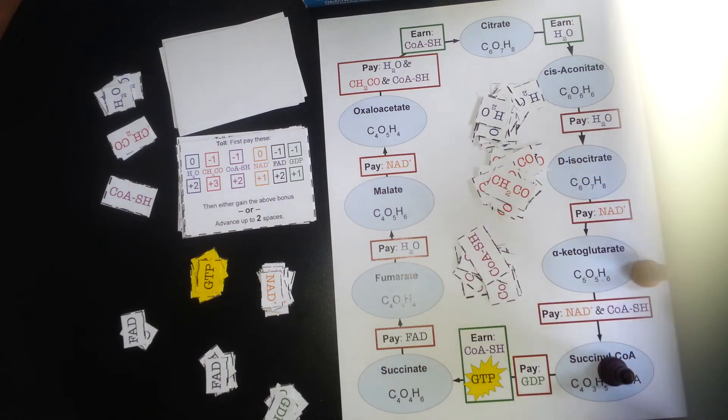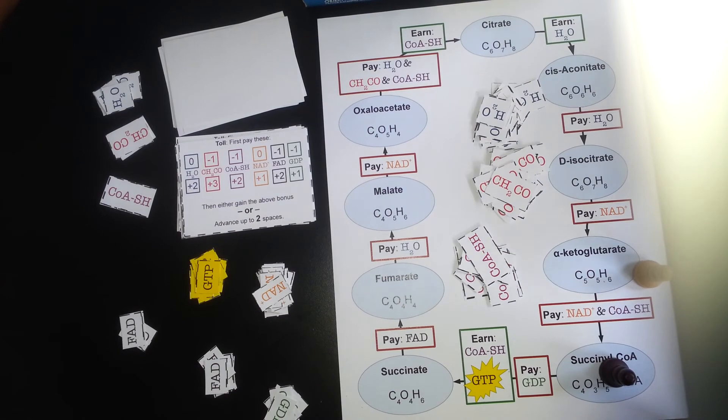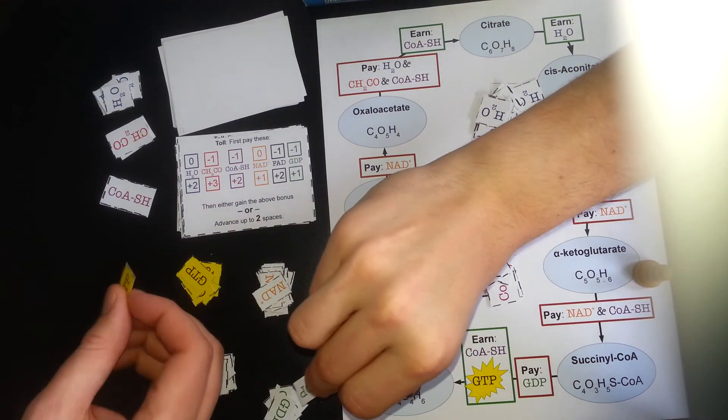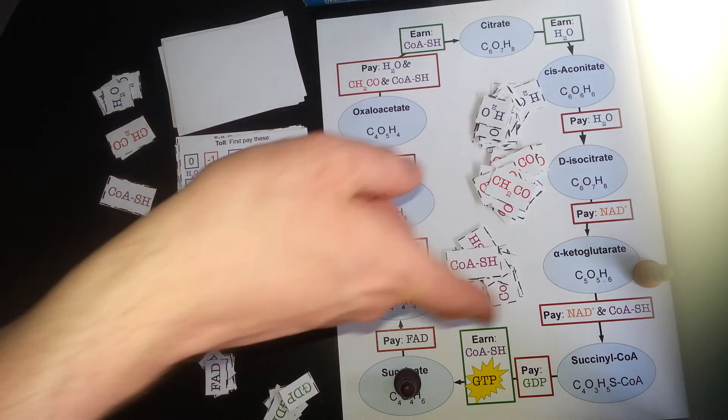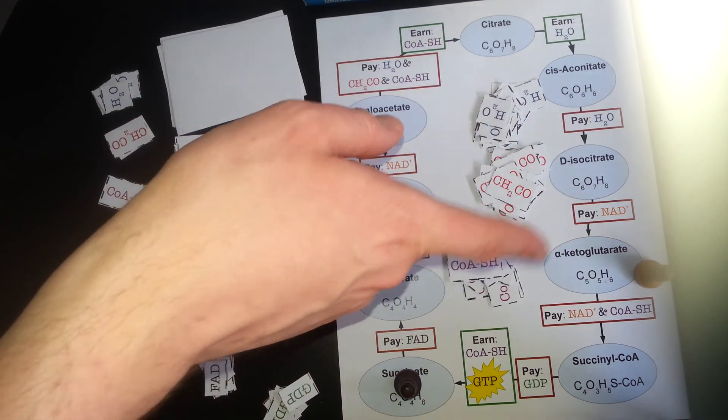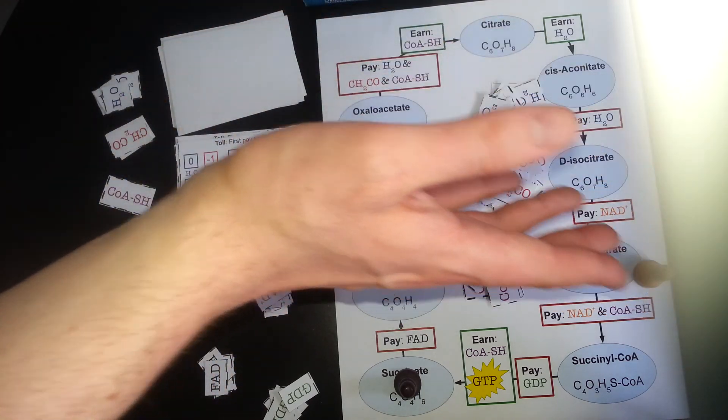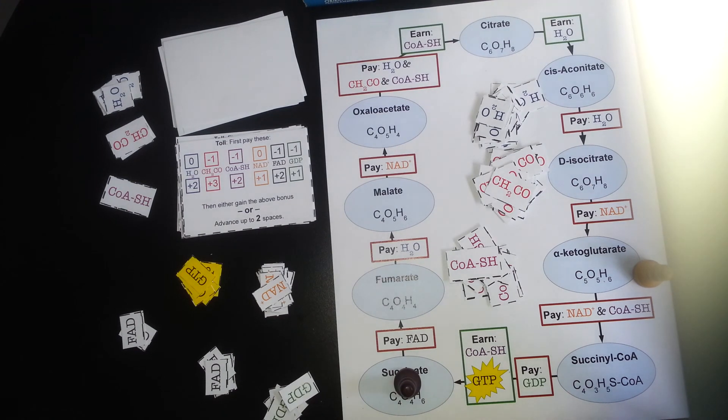Alright, so I will move one, pay the NAD+, and pay the CoASH. Excellent. And then I will move my second one, get rid of my GDP, and earn a GTP. Alright, and that signals that he's made it past the bottom of the board one time, and so if he were to come up and lap me, then we would know that he was further around, because he had earned one GTP point, so he'd be winning.